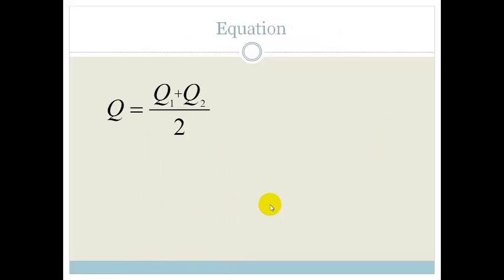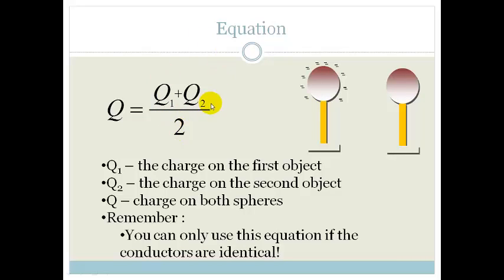And that is the conservation of charge. The equation to work out what the final charge is going to be is q equals q1 plus q2 over 2. So we'd have the first one, which would be q1, which is the charge on the first object, q2 is the charge on the second object, and q is the charge on both spheres after they've tapped each other. Now remember we can only use this equation if the conductors are identical.